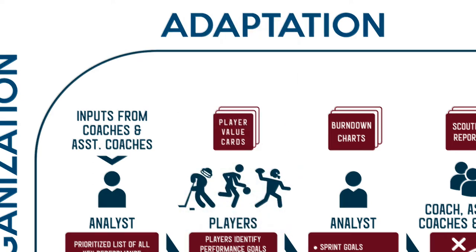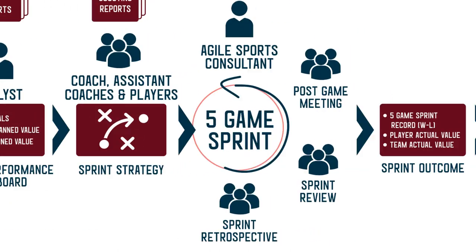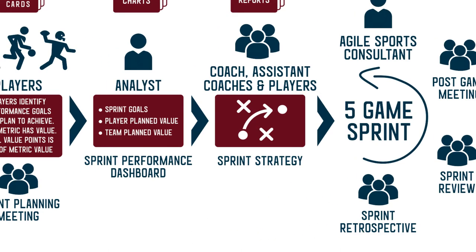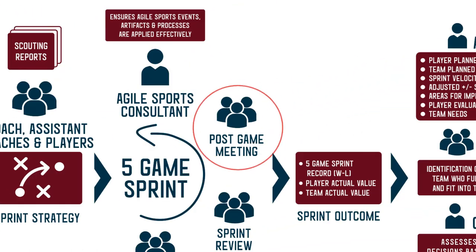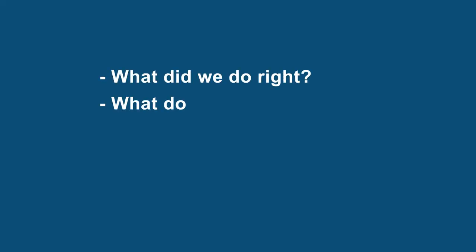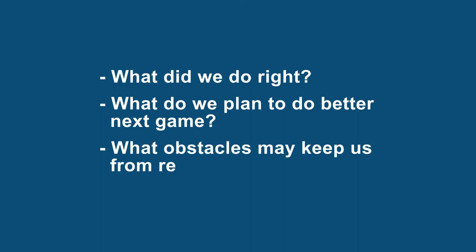Players learn how to create value and achieve team synergy. The team planned value and each player's planned values, along with the win-loss predictions, become the sprint goal. For the next 10 games, the players focus on outperforming their opponents in the metrics identified in the sprint performance dashboard. Following each game is a post-game meeting where each player reviews their performance and analyzes what they did right, what they plan to do better next game, and what obstacles may keep the team from achieving the sprint goal.